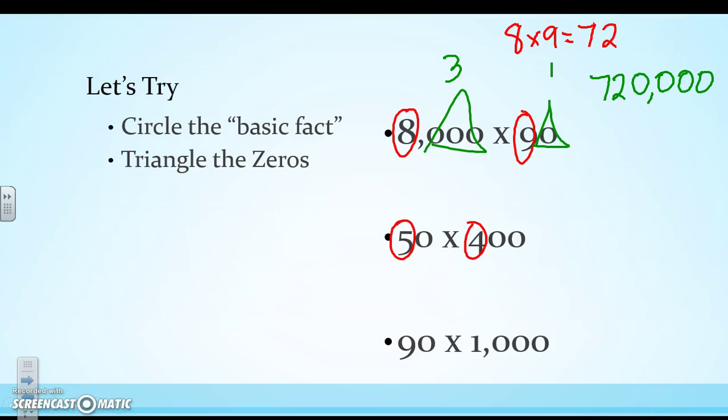All right, again, we have 50 times 400. The basic fact is 5 times 4, which is 20. Triangle those 0s. Now, again, remember, we have a 0 here, so don't get tricked on the total number of 0s here. So we have three 0s from the ones we triangled, and then one more 0 from the 20 in 5 times 4. So our total number of 0s in this case is really 4, because we have the extra 0 from our basic fact. So 50 times 400 is 20,000.